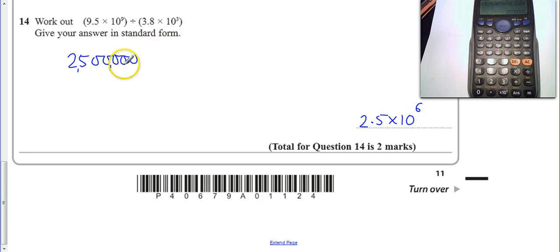There's another way you can do it though. So, there is an alternative way, so if we just get this out of the way. If you do 9.5 divided by 3.8, just the number bit of the standard form, that gives you 2.5.